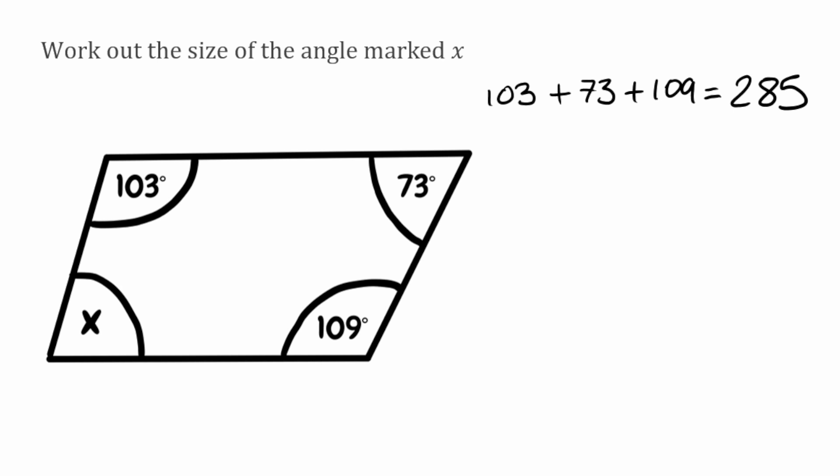So we know so far these angles add up to 285, so to find the remaining one all we need to do is take that away from 360. So if we do 360 take away that 285 we end up with 75. So our missing angle marked x for this particular question would be 75 degrees.